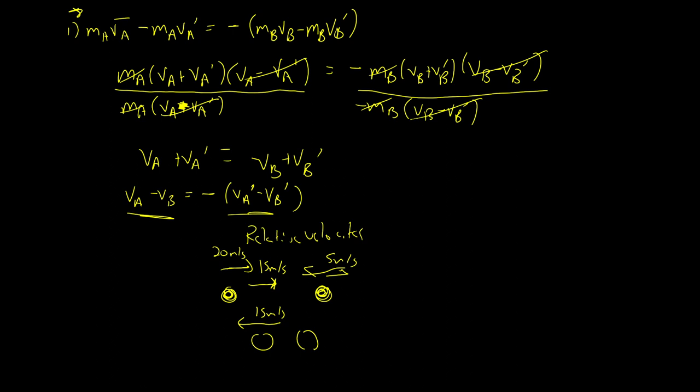And so the relative velocities are, we could think of as being conserved in the momentum. Now, how much goes to each particle depends on the masses of each particle. And so this is what an elastic collision looks like.